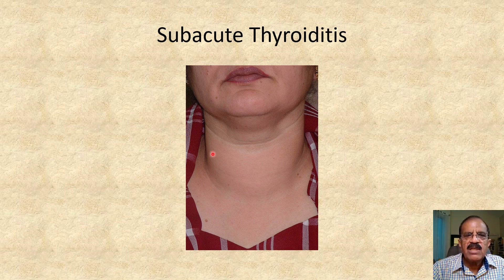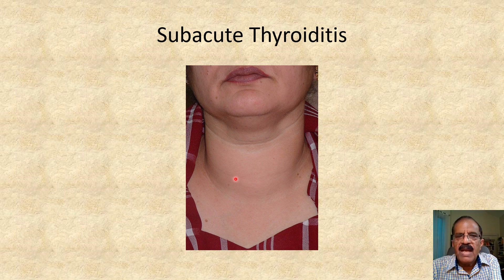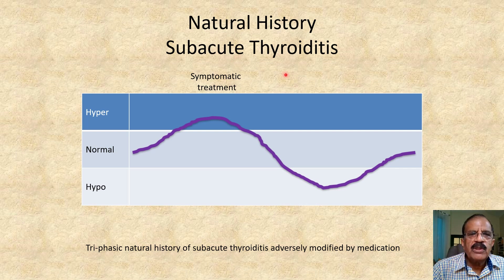This woman has diffuse enlargement of the thyroid gland, but not as much as you see in Graves disease, and she had symptoms of hyperthyroidism. This is the natural history of subacute thyroiditis.